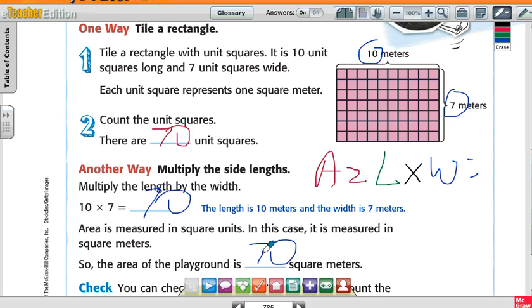Could I do one way over the other, or does it matter which way I do it to solve the problem? It really doesn't matter. Some of you will just multiply 7 times 10, boom. Some of you are going to have to tile the rectangle and count all the squares. That's okay.